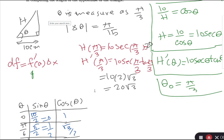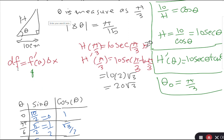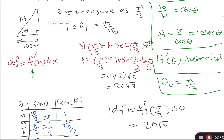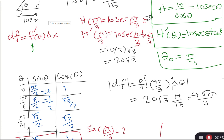Now I can find the absolute error. The absolute error is approximated by |dh| = |h'(π/3)| · |Δθ|. With h'(π/3) = 20√3 and Δθ = π/15, the absolute error is 20√3 · (π/15) = 4√3·π/3 centimeters.